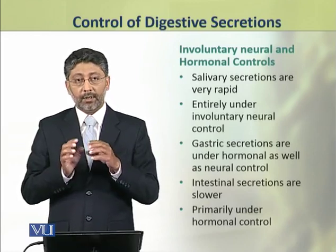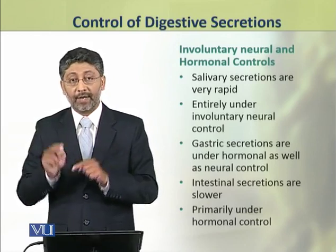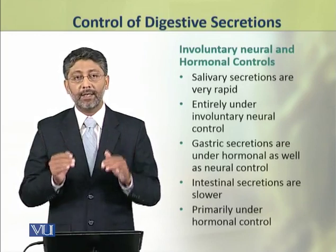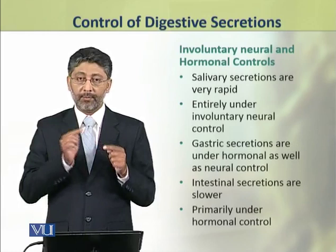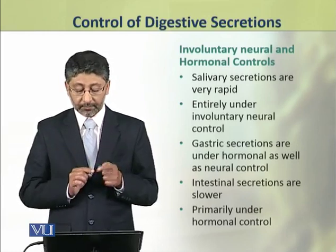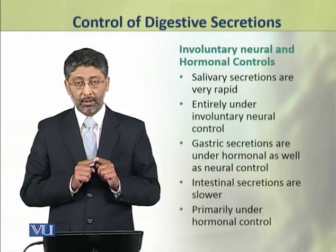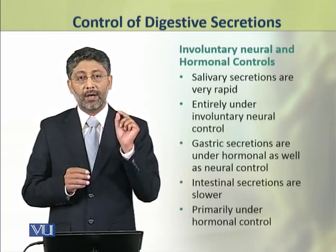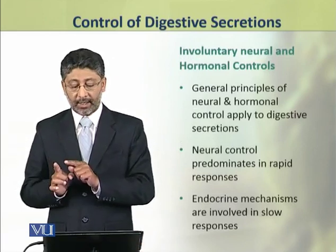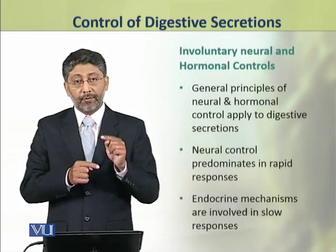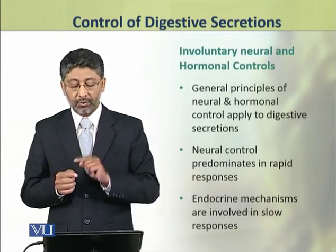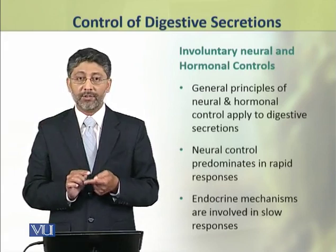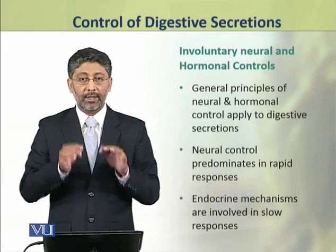These controls control all the secretory activities of glands. For example, salivary secretions are very rapid — they are entirely under involuntary neural control. Gastric secretions are under hormonal as well as neural control. The intestinal secretions are quite slower; they are primarily under hormonal control. The general principles of neural and hormonal controls are applicable to digestive secretions: neural control predominates in rapid responses while endocrine mechanisms are involved in slow responses.